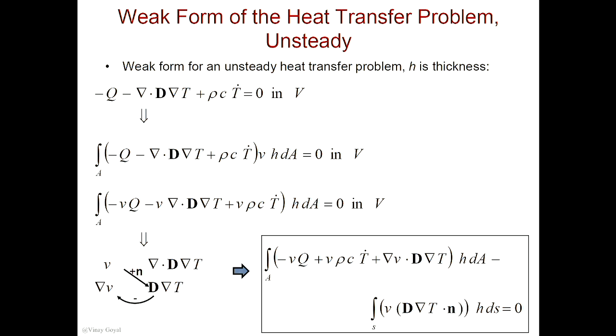So now all I have to do is multiply V across every single component of that equation, and I have to now integrate by parts. To integrate by parts, we're only going to integrate by parts this term here because T right now has second-order differentiation — I have gradient of a gradient, so that's going to give me second-order differentiation on T. So I want to split that order of differentiation with V, sharing that derivative over to V so that I can lower the continuity requirements and develop the weak form.